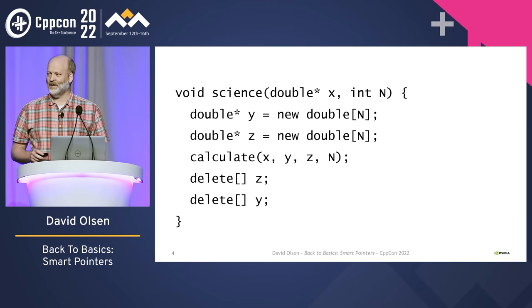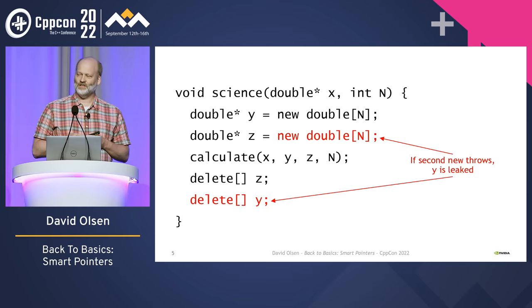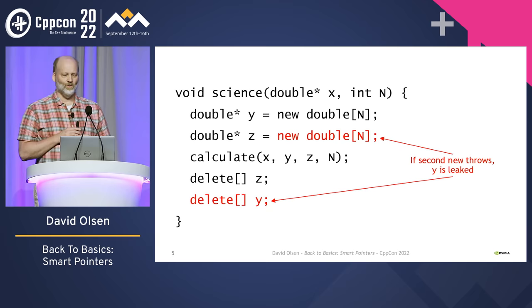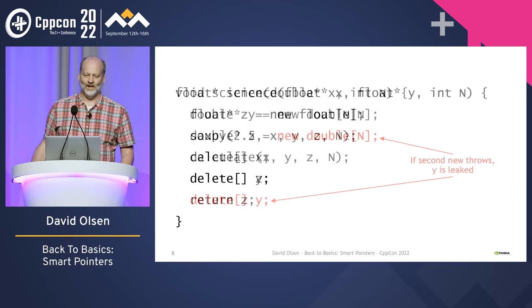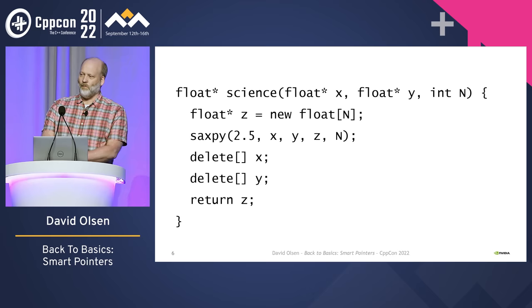It's similar but a little more subtle. If the second allocation fails and throws an exception, we won't do either of the deletes, but that means the memory for Y will be leaked.